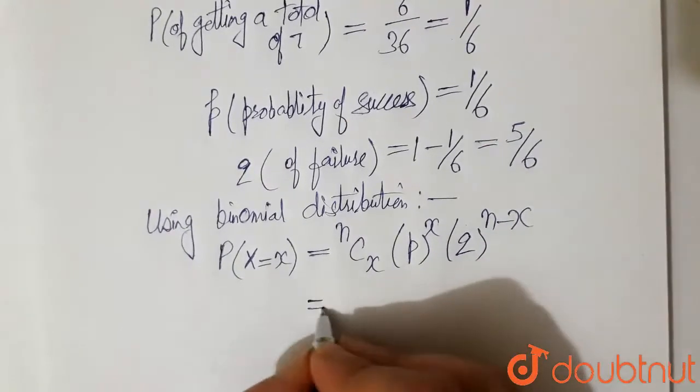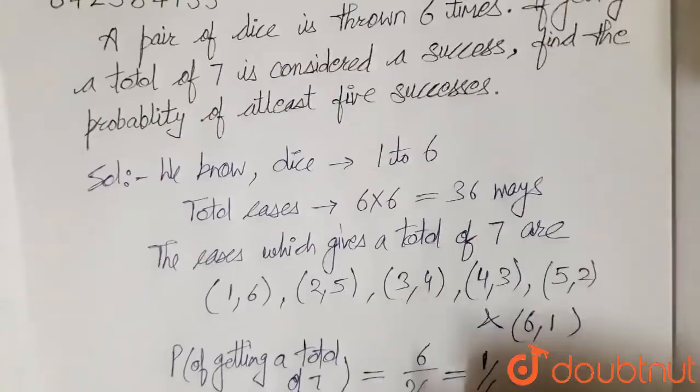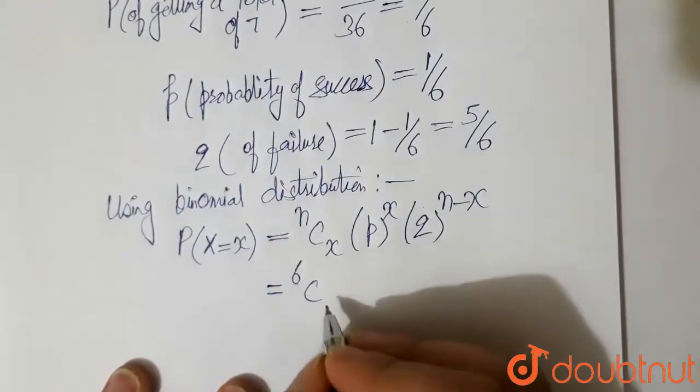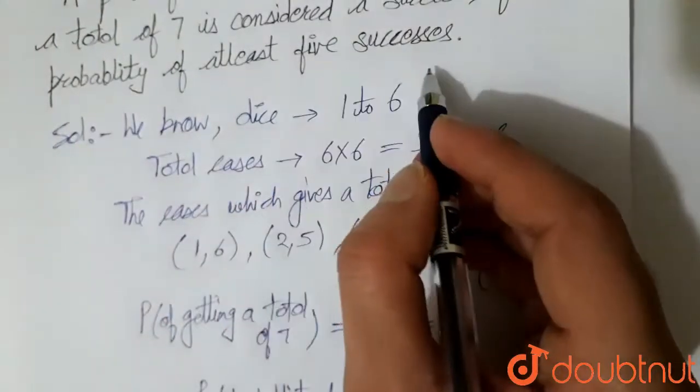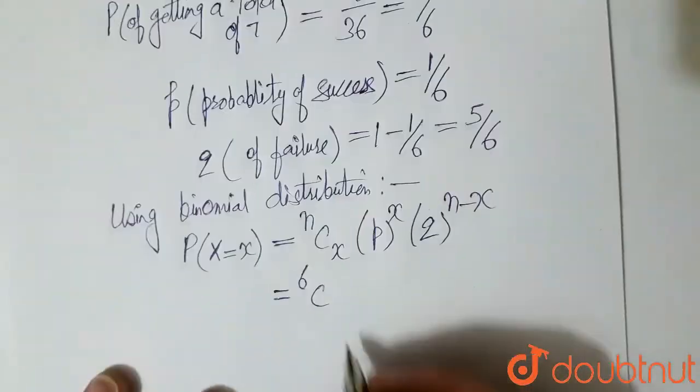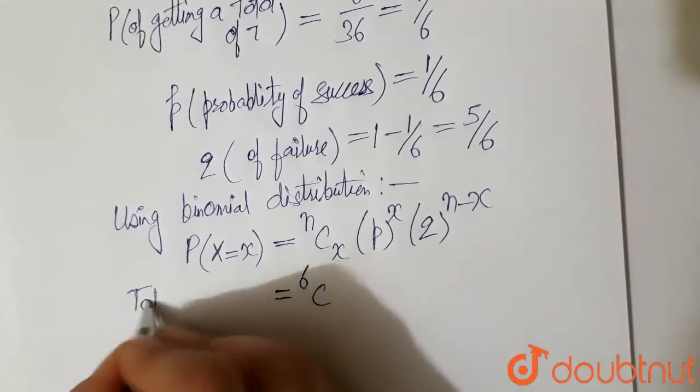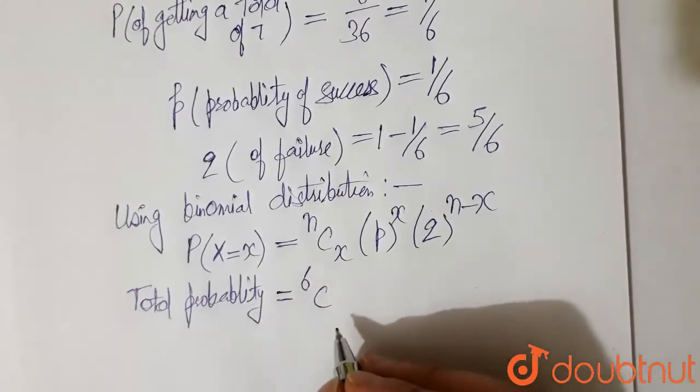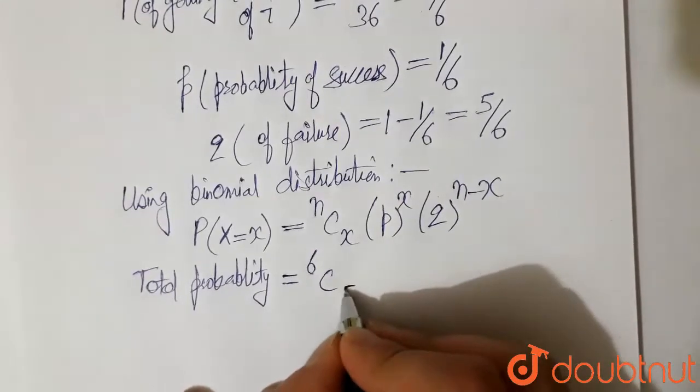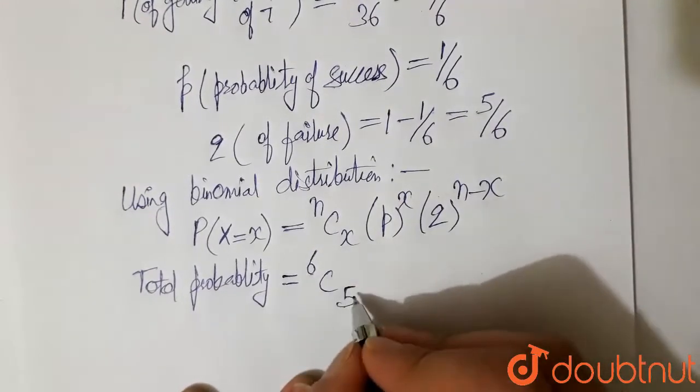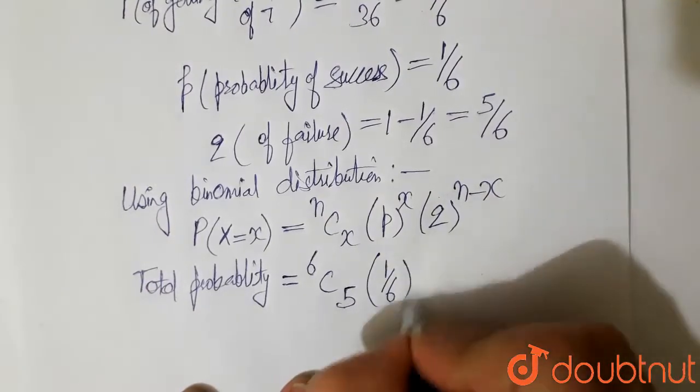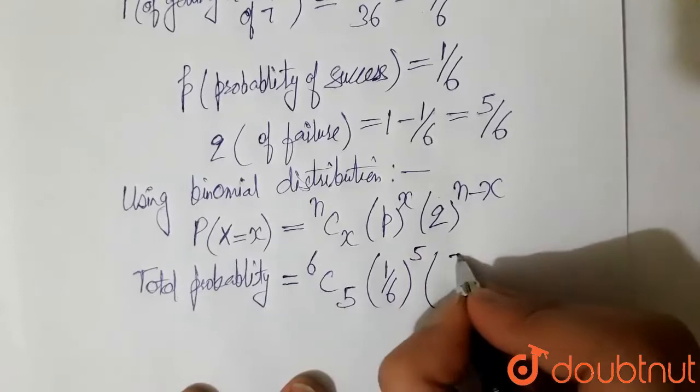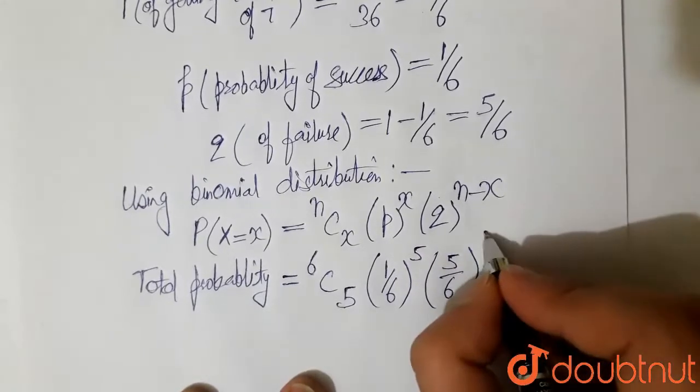So here it becomes equal to, N is here, we have, we are throwing pair of dice 6 times. So N is 6 here. So 6C. Now we have to get probability of at least 5 successes. So total probability is at least 5 successes. So first case is 5 successes. So this is 6C5, probability of success that is 1 by 6 to the power 5, and 5 by 6 to the power 6 minus 5 that is 1.